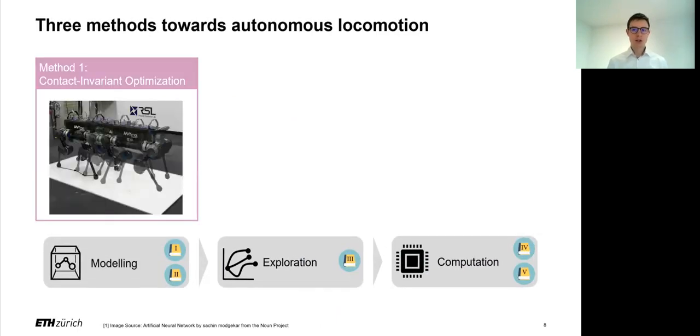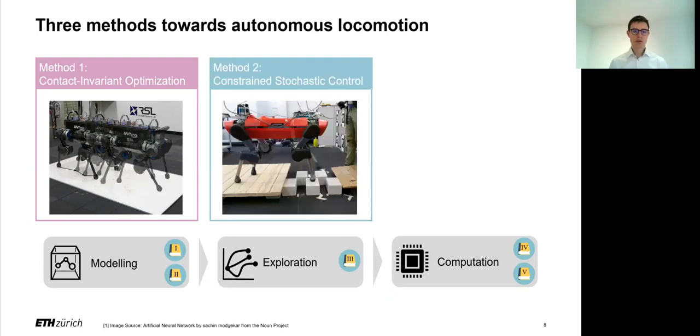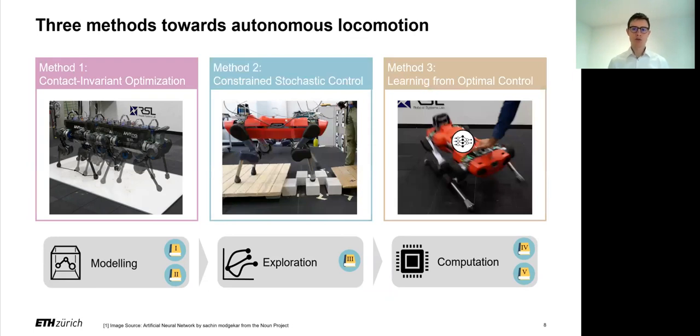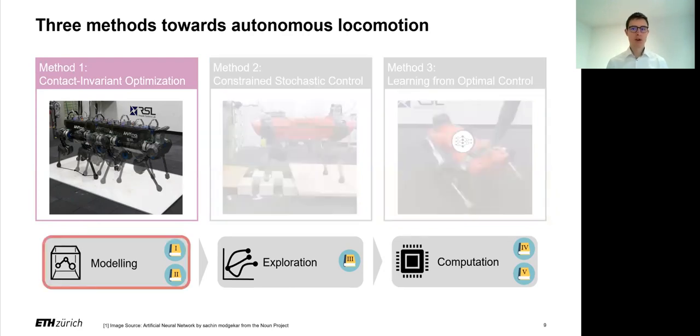First, I'll try to capture the full effects of contacts away from handcrafted simplifications, such that we can reproduce what happens also on such slippery paths that you have seen earlier. Then I'll continue with the theme of using an accurate model and introduce stochasticity for exploration, such that we can cross those discrete terrain patches you see in the picture. And finally, I will use machine learning to train a neural network that inherits the capabilities of the first two methods while only requiring a fraction of the computational cost at runtime. Let me begin with the first one, modeling realistic scenarios.